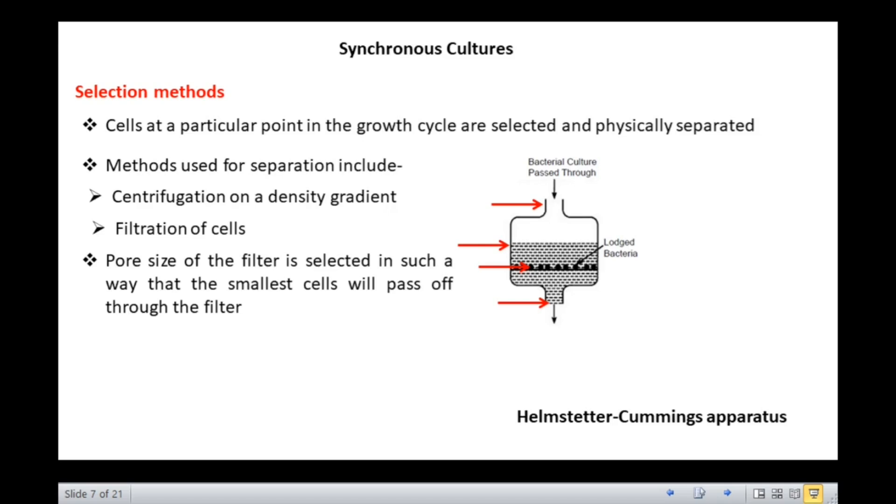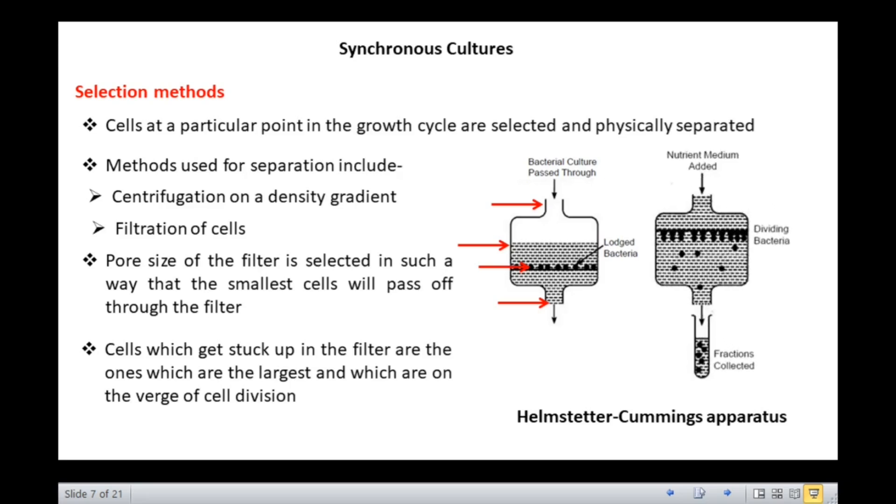These are the cells which have just divided and now would go through the entire life cycle before dividing again. On the other hand, the cells which get stuck up in the filter are the ones which are the largest and which are on the verge of cell division. These can be collected by inverting the filter and passing medium through the filter from above. When the cells divide, they fall off the filter giving a continuous supply of newly born cells which can grow synchronously.